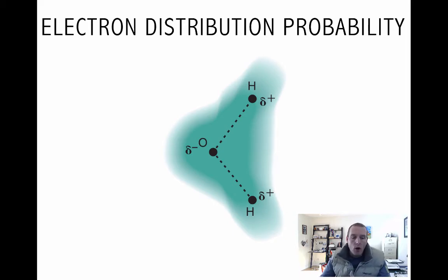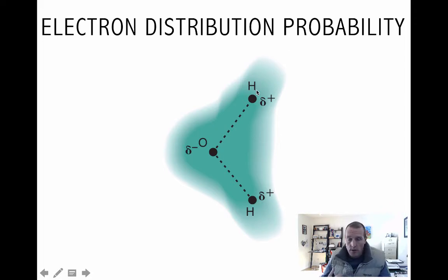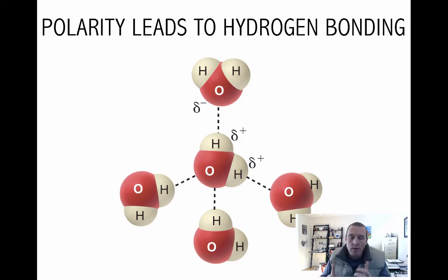Last time I talked about how water has this unusual property of being polar because oxygen is a highly electronegative atom. Oxygen has a high attractivity for electrons, so it pulls the electrons away from the hydrogen in this covalent bond. Those electrons are negatively charged, so the oxygen ends up being slightly negatively charged and the hydrogen slightly positively charged. This gives us a molecule with a region of negative and positive partial charge — water is polar.